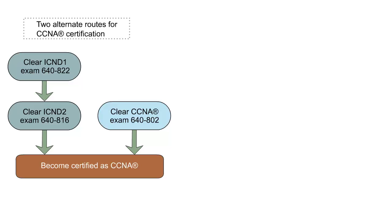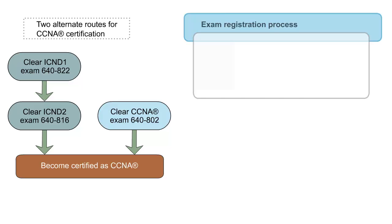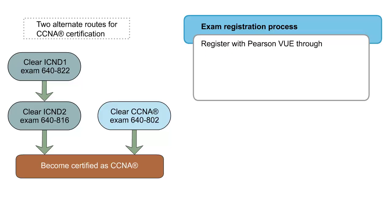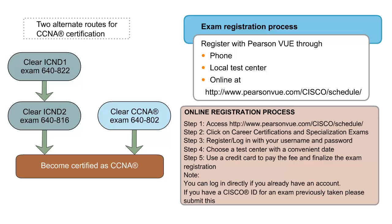The second path involves taking exam 640-802 directly to get the CCNA credential. This route is usually taken by experienced networking professionals who are confident of their knowledge across the entire curriculum. You can register for any of the exams with Pearson VUE either online, by phone, or by visiting your nearest Pearson test center.